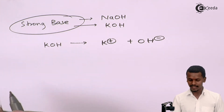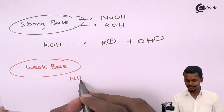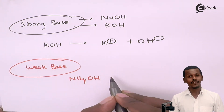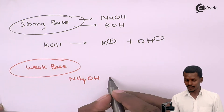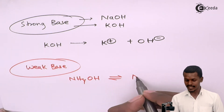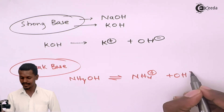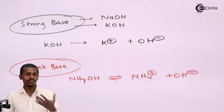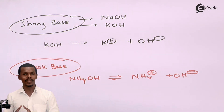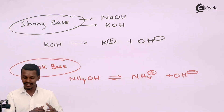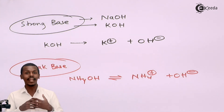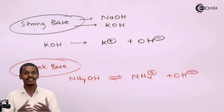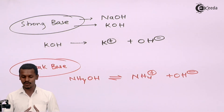For weak base, consider NH4OH. When dissolved in water, it gives only partial dissociation into NH4+ and OH−. Since OH− is produced it is still a base, but it is not a strong base — it is a weak base because, due to ionic equilibrium, the OH− can revert back to NH4OH. The limited dissociation of OH− is why it is called a weak base.